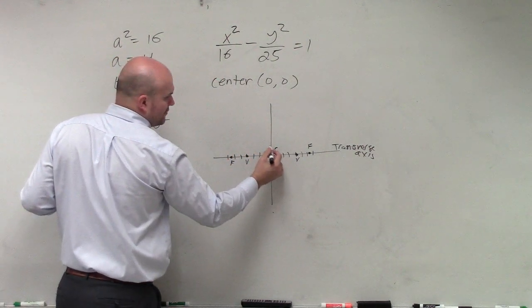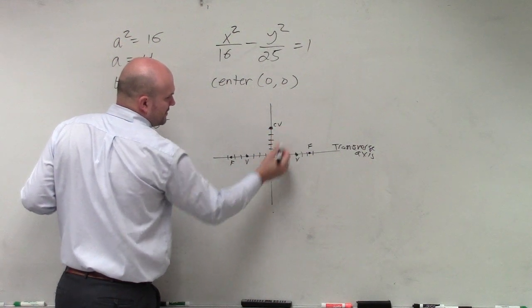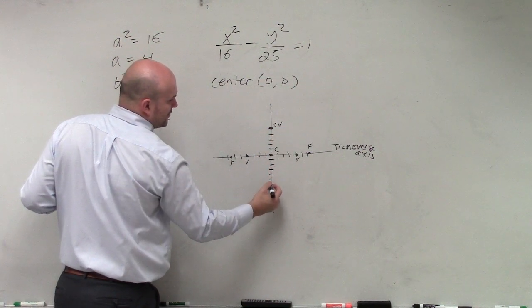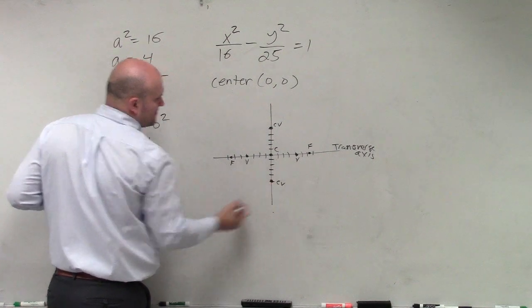So I'd go up 5, 1, 2, 3, 4, 5. So that's co-vertices. And down 5, 1, 2, 3, 4, 5. Co-vertices.